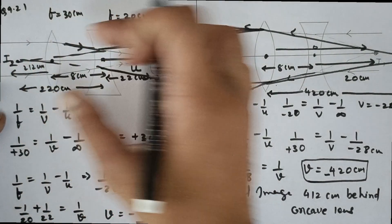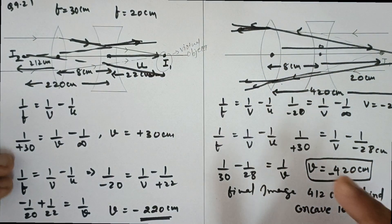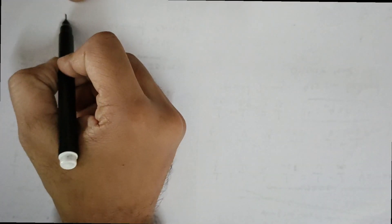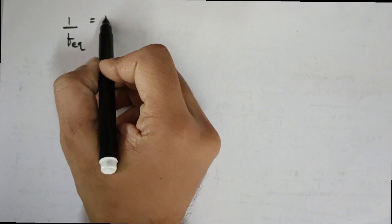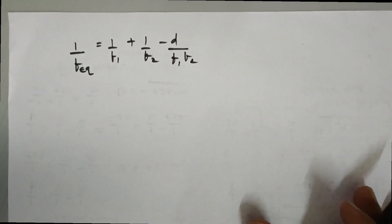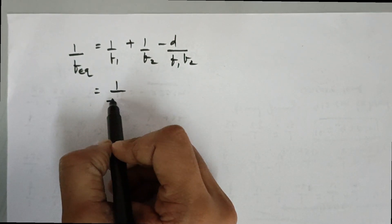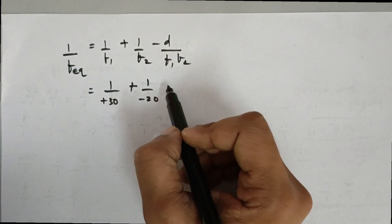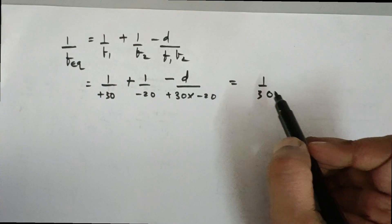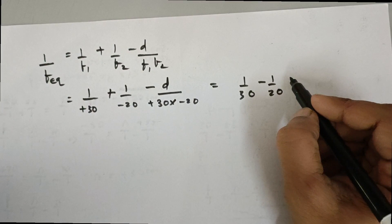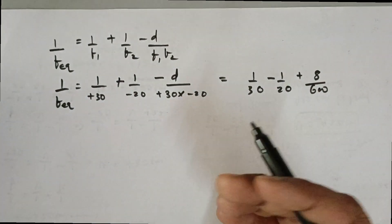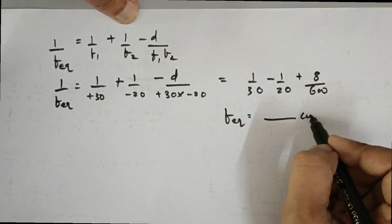So it depends on which direction you pass the light. Whenever there are lenses with separation, you need to be very careful about the direction — that matters a lot. Now let's find the equivalent focal length using the formula: 1/f_eq = 1/f1 + 1/f2 − d/(f1·f2). Here f1 = +30 (convex), f2 = −20 (concave), and d = 8 cm: 1/f_eq = 1/30 − 1/20 + 8/(30 × 20). Please do the calculations yourself to get the equivalent focal length.